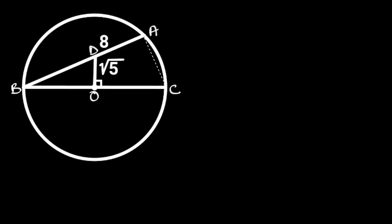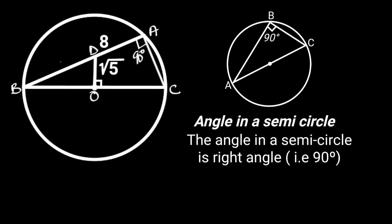Next, let's join A and C with a straight line. Observe that angle BAC is 90 degrees. Reason: from the circle theorem of angle in a semicircle, which states that the angle in a semicircle is a right angle, that is 90 degrees.